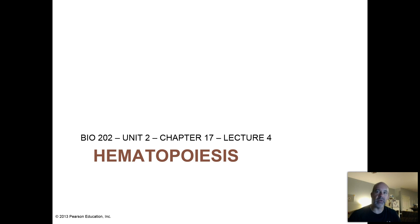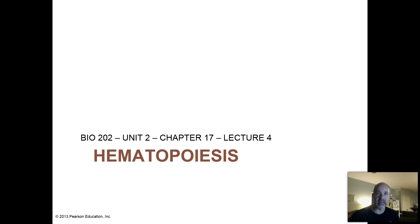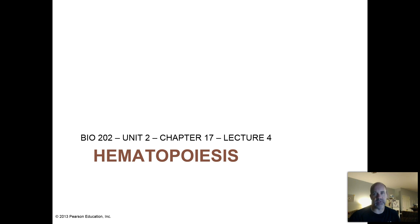So that was an overview of erythrocytes and an introduction to hemoglobin. In the fourth video lecture for chapter 17, we're going to talk about blood cell formation, called hematopoiesis. 'Hemato' generally refers to blood, and 'poiesis' is a root word meaning to create or form — so hematopoiesis literally means blood formation, and we'll talk about how that all works in the fourth lecture for chapter 17.